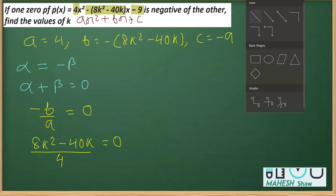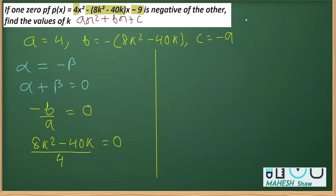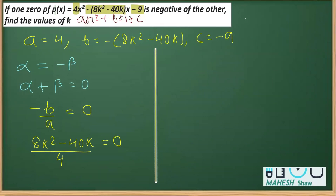For further calculation, we transpose 4 to the other side. It multiplies with 0 to become 0, so we get 8k² - 40k = 0.